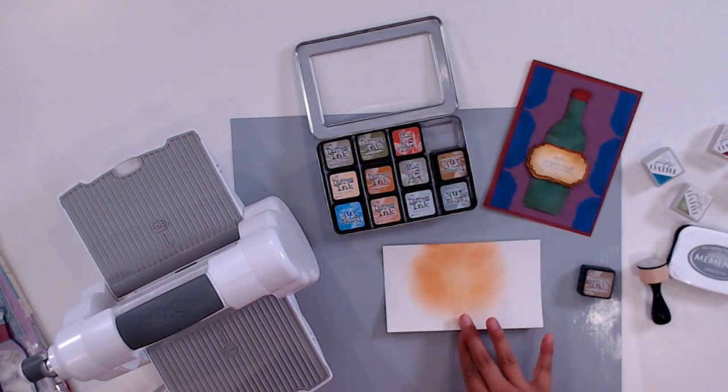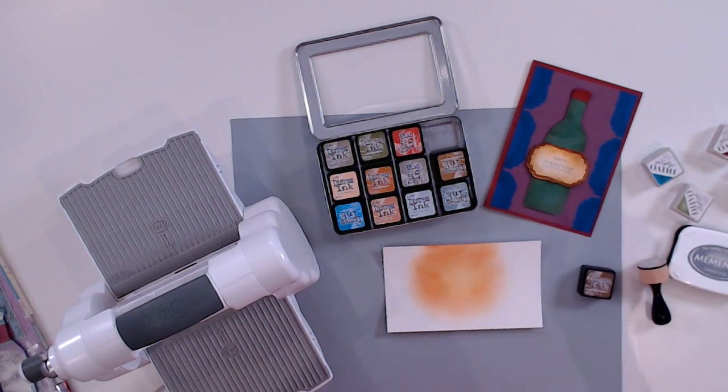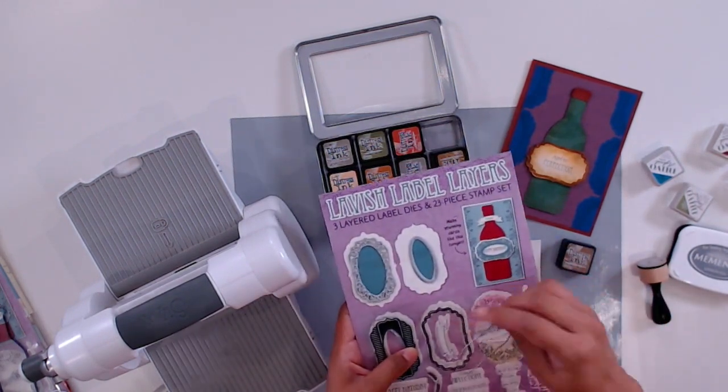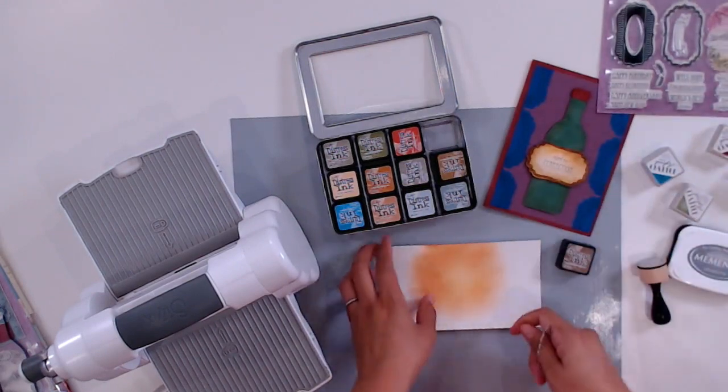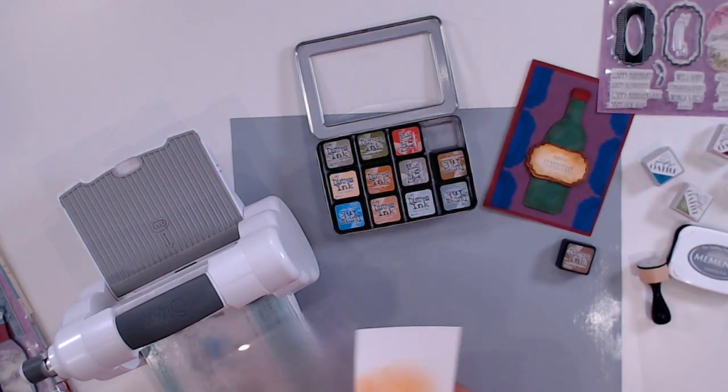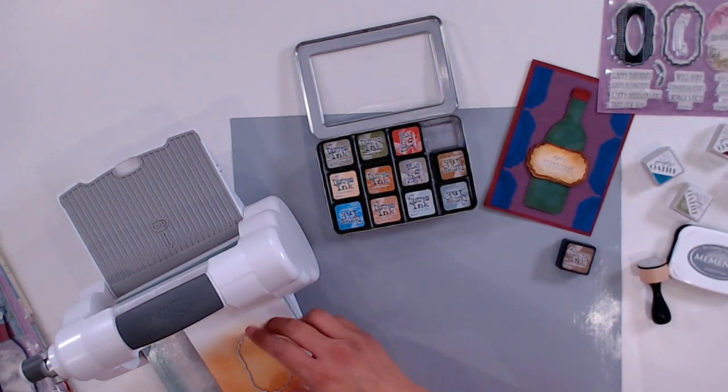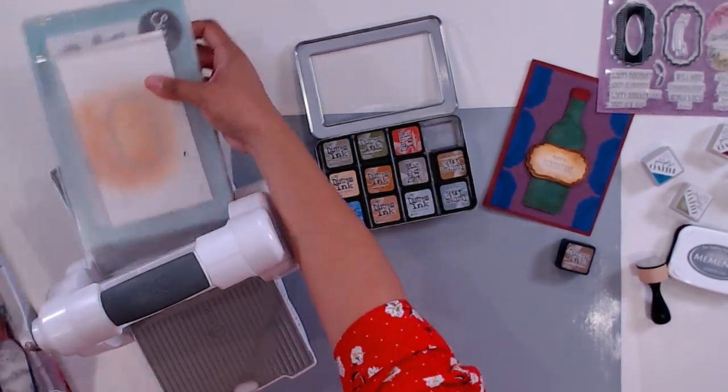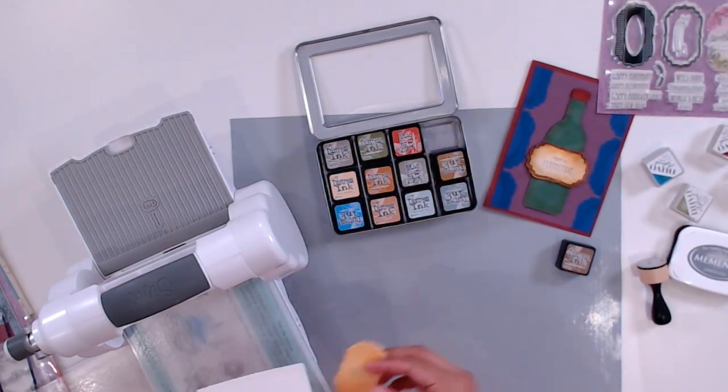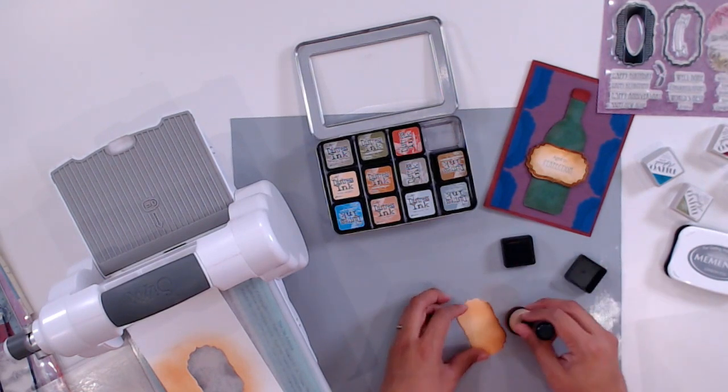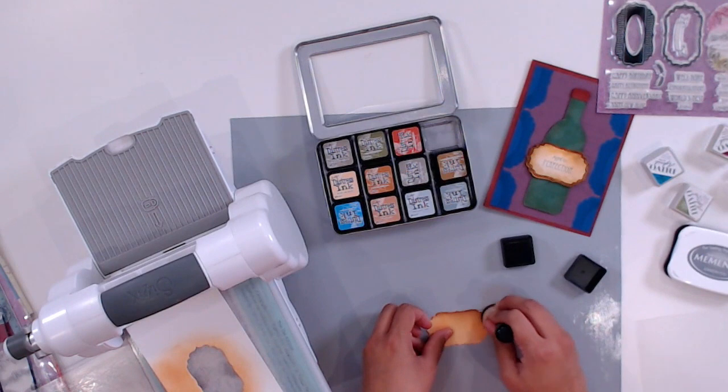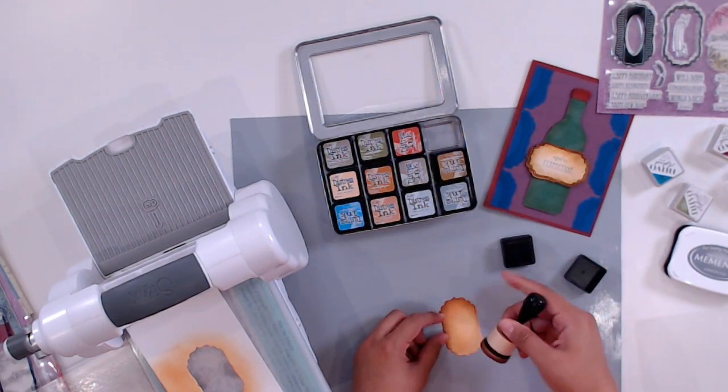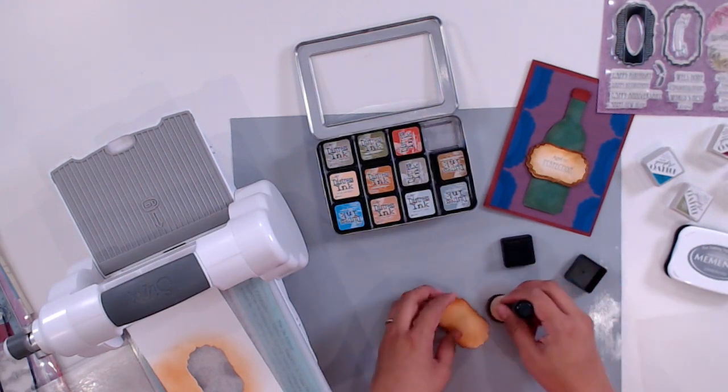I'm going to take a pause in my distressing to die cut my label shape because I want to concentrate the Gathered Twigs on the edges of my label. I'm going to grab this outer label die from the Lavish Label Layers gift set and cut that in my Sizzix fold-away machine. I'm going to be using this same die throughout my card.